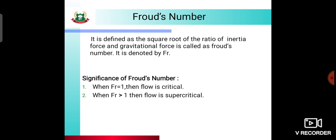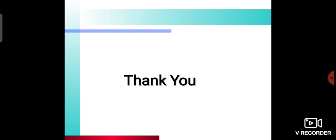When Fr is greater than 1, the flow is supercritical. When Fr is less than 1, the flow is subcritical. These are the significances of Froude's number and conclude all topics of Unit 5. The assignment for this topic will be uploaded in Google Classroom. Thank you.